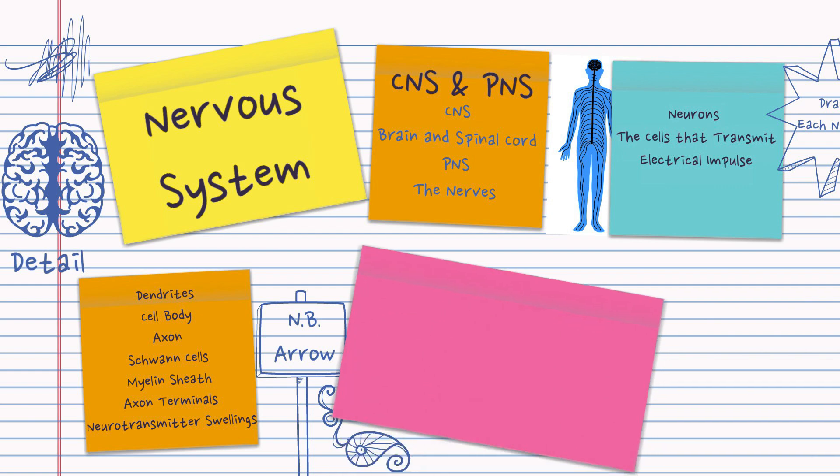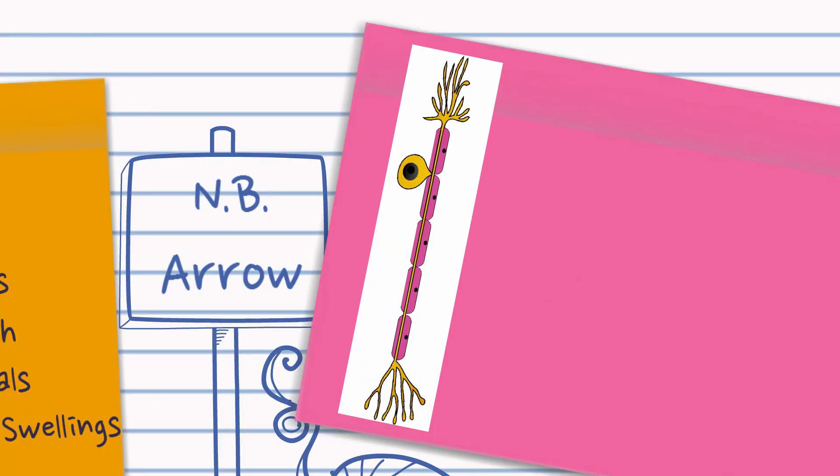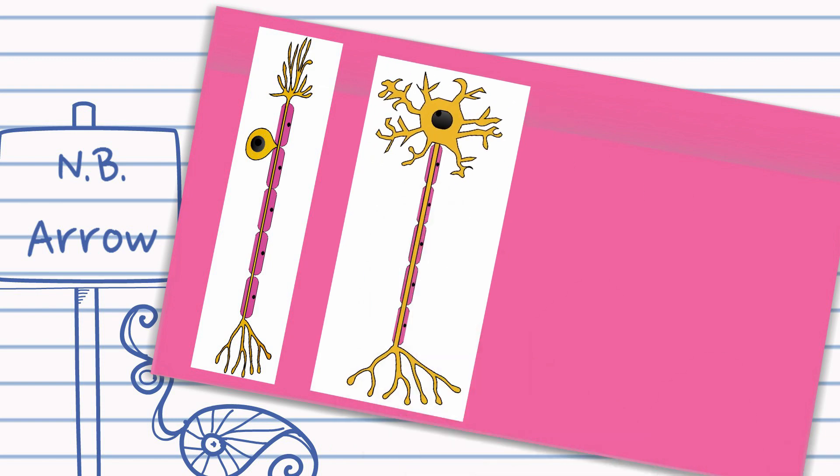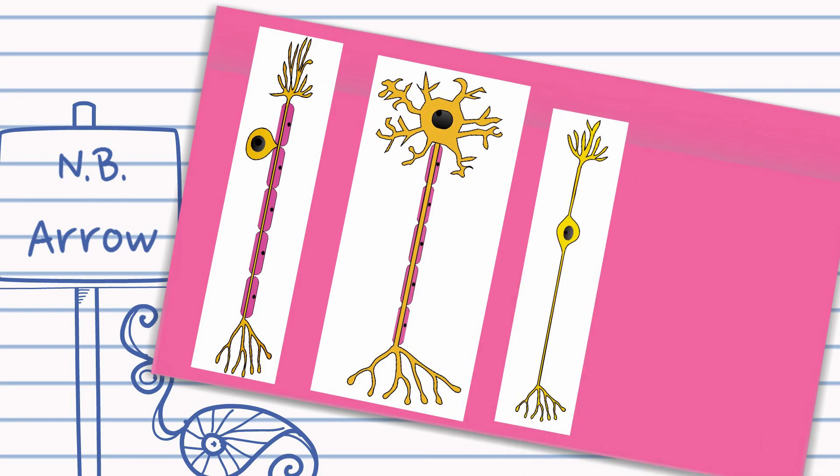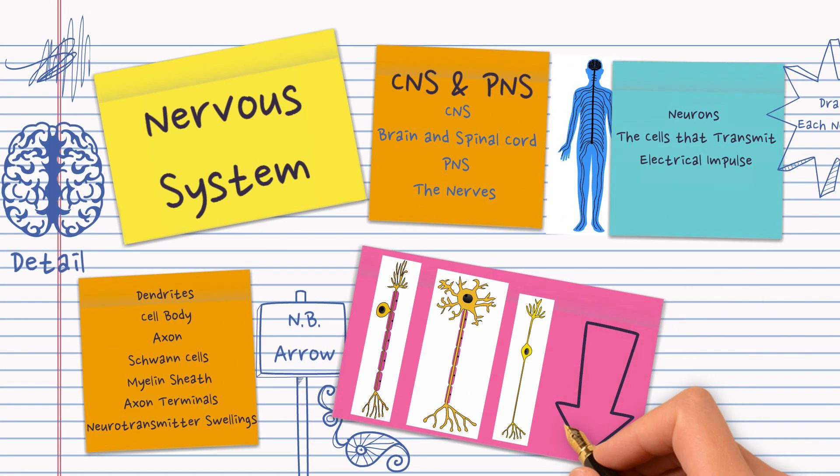And here are those neurons. Sensory neurons sending impulses to the central nervous system. Motor neurons out of the central nervous system to an effector and interneurons only within the central nervous system. Note the arrow.